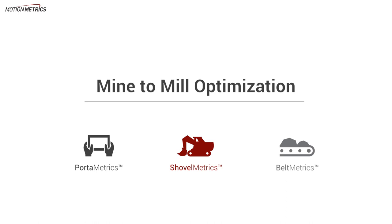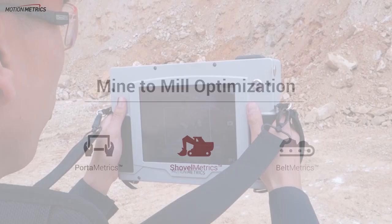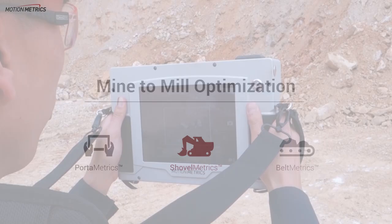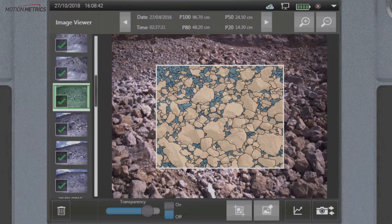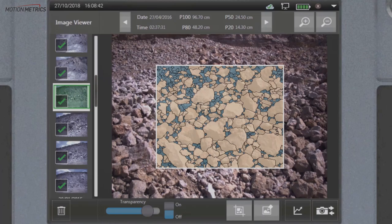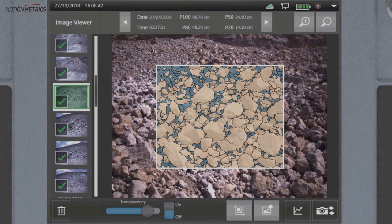We offer three easy-to-use solutions for measuring particle size in the pit and at the plant. Portametrix is a rugged handheld solution that delivers fast and accurate particle size distributions at the bench face without the need for a scaling object.